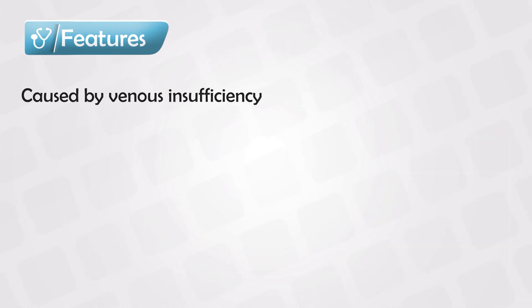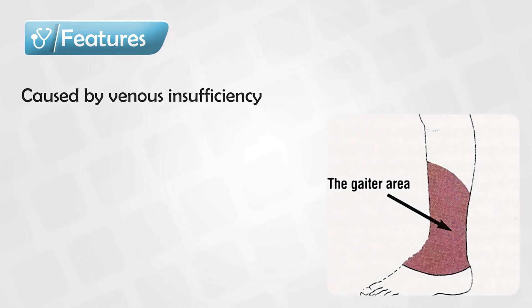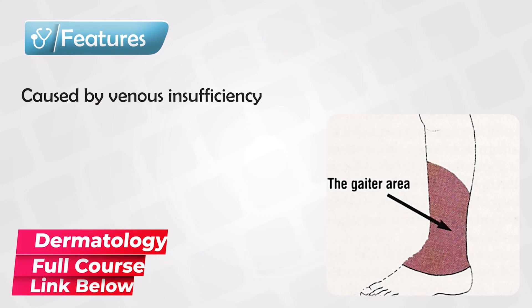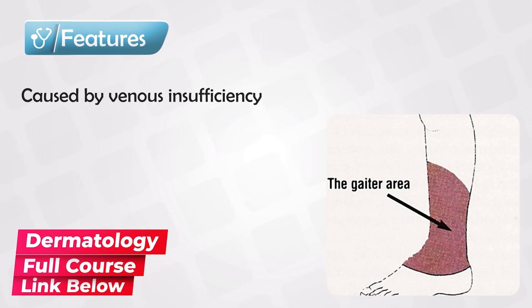They are mainly seen in the gator area, which is the ankle to the mid-calf area, mainly over the right or left malleolus area.